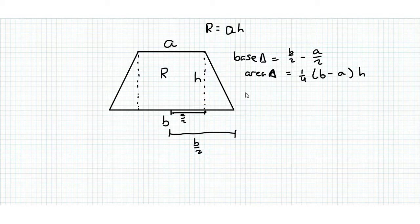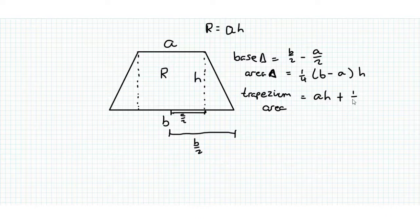So the area of the trapezium is equal to AH, that's the rectangle, plus two lots of this, so that's one half H times B minus A.